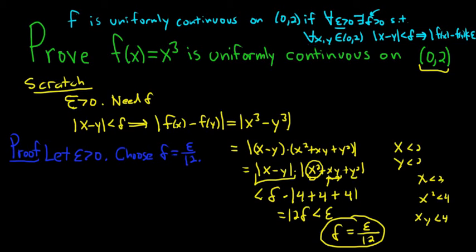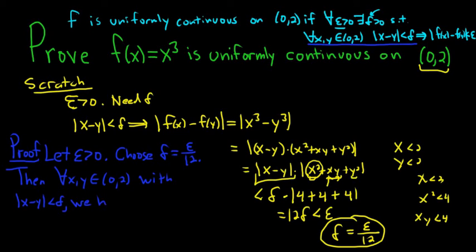Okay? Now we have to state this here. So then for all xy in the open interval 0, 2, with the distance between x and y being less than delta, we have, and so now we look at the distance between f of x and f of y. So we have the absolute value of f of x minus the absolute value of f of y.